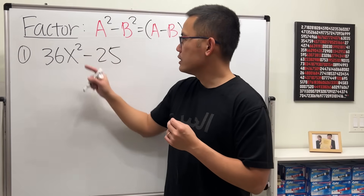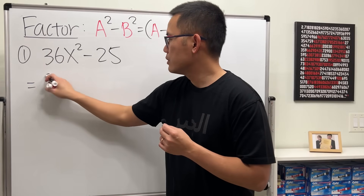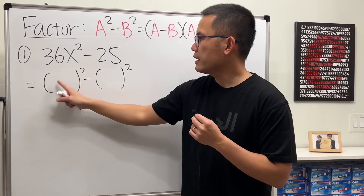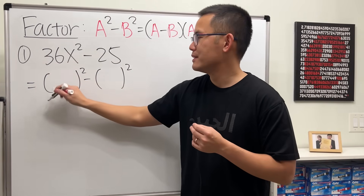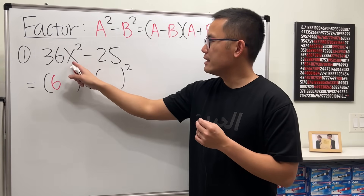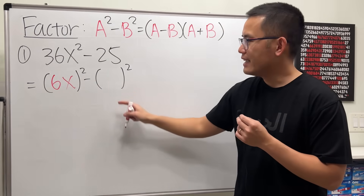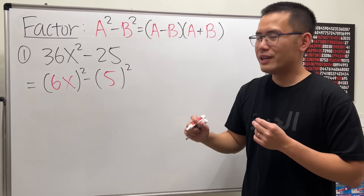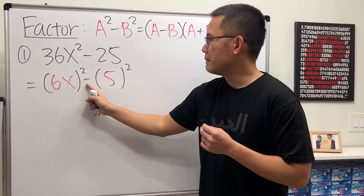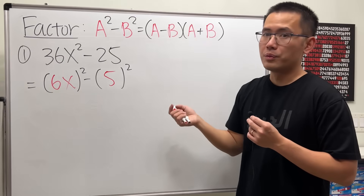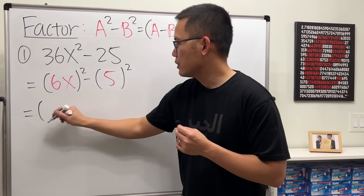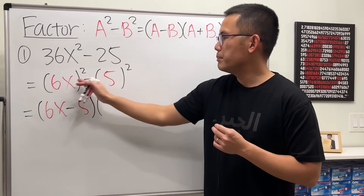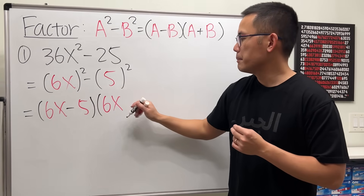Notice we have a squared and a minus, so let's open two sets of parentheses with squares on the outside. Ask ourselves: what square gives us 36? That's 6. We need x squared so we need the x. What square gives us 25? That's 5. Now we have a squared minus b squared, so we use the formula: a minus b gives us 6x minus 5, and a plus b gives us 6x plus 5.